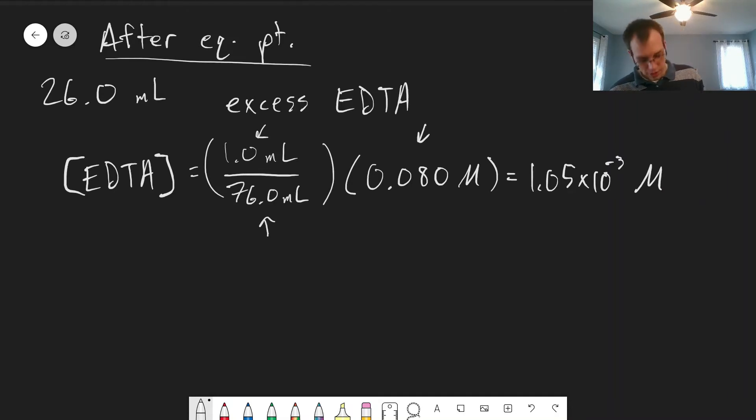We also need to know the concentration of the complex that's formed. The amount of complex hasn't changed, but the volume has changed a little bit, so we'll have a slightly different concentration than in the previous video. We have our 0.040 molar initial concentration, and the dilution factor changes from 50 over 75 to 50 over 76.